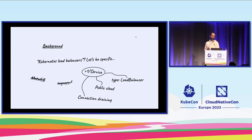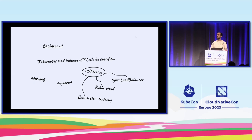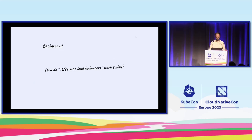Specifically when you specify a Service of type LoadBalancer — and moreover this is tailored towards clusters running on the public cloud — essentially load balancers that get provisioned by the Kubernetes control plane. An important term to remember for the later part of this talk is connection draining. I'll get back to what that concretely means, but it's a good topic to have in mind from the start.